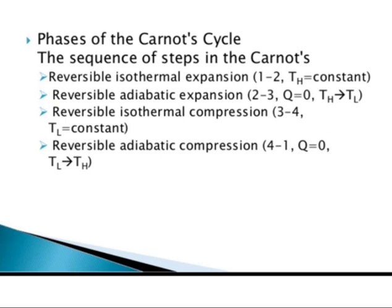Now the phases of the Carnot cycle. The first step is reversible isothermal expansion from A to B, where temperature is constant at the hot temperature TH. The second step is reversible adiabatic expansion from B to C, where Q equals zero and temperature changes from T-hot to T-cold.